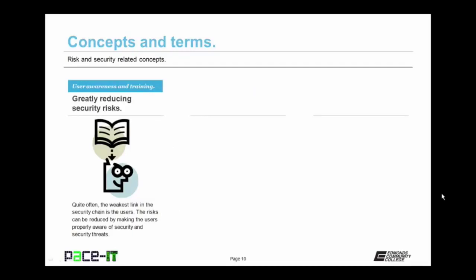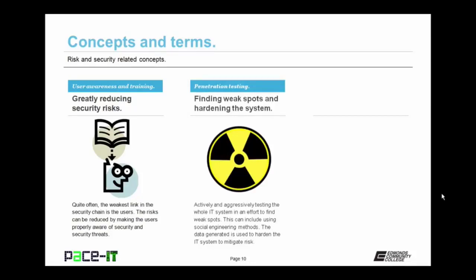User awareness and training can greatly reduce your security risks. Quite often, the weakest link in the security chain is the end user. The risks can be reduced by making users properly aware of security and security threats through awareness training and security training in general. This training should be conducted on an ongoing basis — it's never a one and done thing. Penetration testing is the finding of weak spots and the hardening of systems. It is actively and aggressively testing the whole IT system in an effort to find weak spots. This can include using social engineering methods on your end users to find out if they are your weak link.